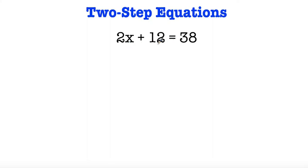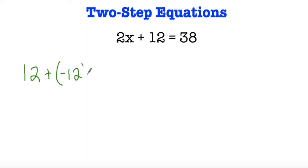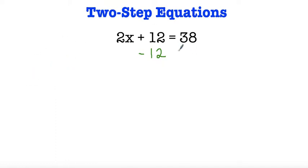So the first thing I could do is get rid of the plus 12. In order to do so, I'm going to use the inverse additive property — I'm going to take 12, add negative 12 to it, and that cancels out. Remember that adding a negative is the same thing as subtracting, so you can either add negative 12 or simply subtract 12 on both sides. If I subtract 12 on the left side, I have to do the same thing and subtract 12 on the right side. So now 12 minus 12 cancels out — that's 0.